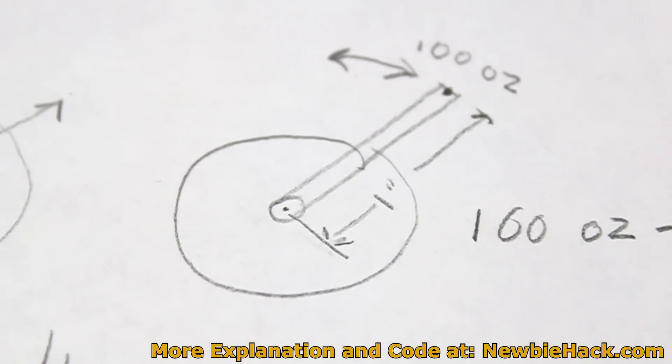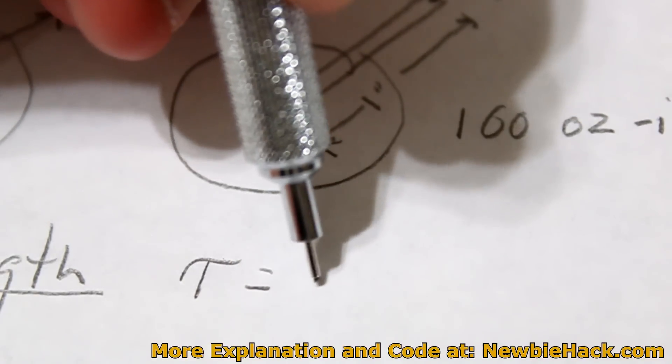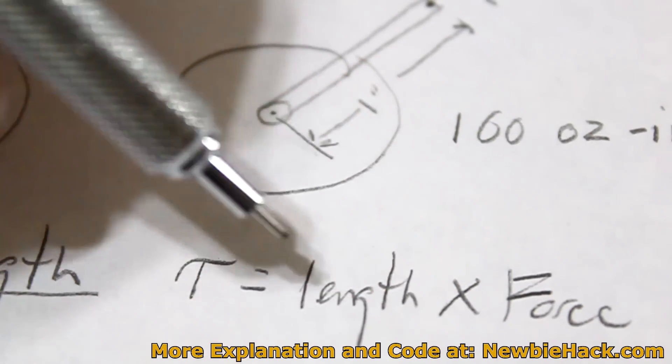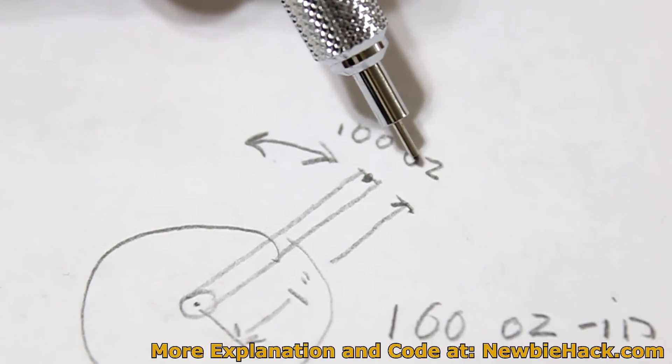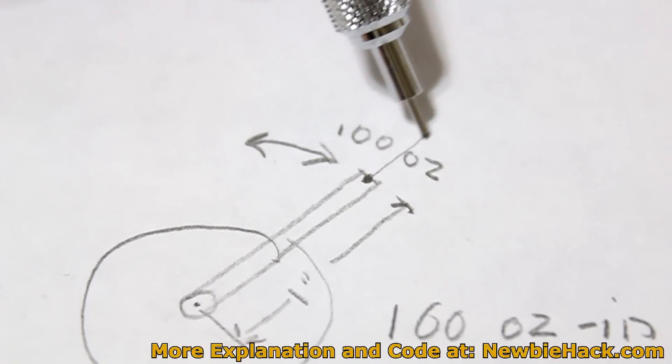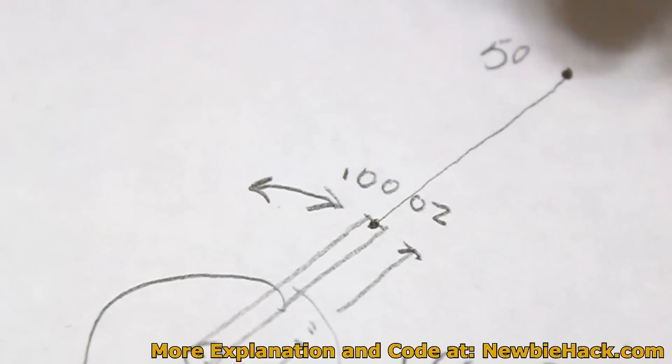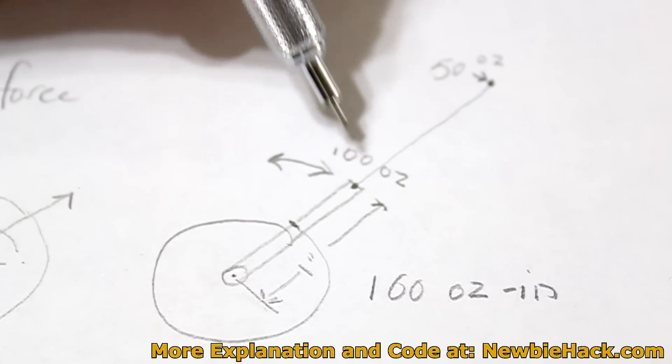There is a relationship between the force and the length. The formula is torque is equal to the length times the force. Knowing that this has a relationship to each other, if this motor was rated 100 ounce inch, this is 1 inch, then if it was at the 2 inch mark, you would only need to apply 50 ounce inches to stall this motor at this point of the arm. If this were at the half point of the arm, this would be 200 ounces.